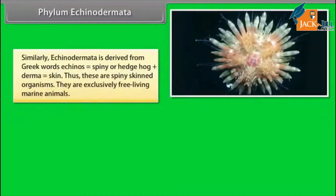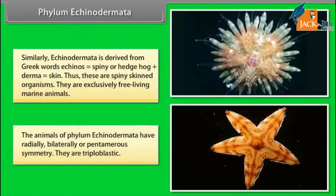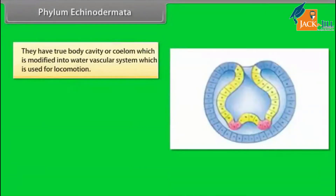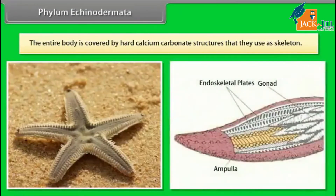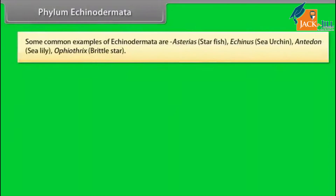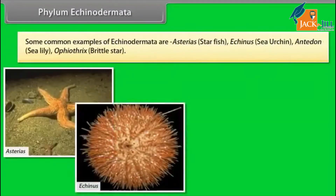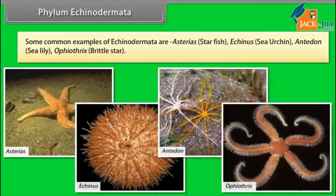Phylum Echinodermata. Echinodermata is derived from Greek words echinose, meaning spiny or hedgehog, plus derma, meaning skin — these are spiny-skinned organisms. They are exclusively free-living marine animals. The animals have radially, bilaterally, or pentamerous symmetry. They are triploblastic and have a true body cavity or coelom, which is modified into a water vascular system used for locomotion. Their body has oral and aboral surfaces; the oral surface has five radial areas called ambulacra. The entire body is covered by hard calcium carbonate structures used as skeleton. Common examples are Asterias (starfish), Echinus (sea urchin), Antedon (sea lily), and Ophiothrix (brittle star).